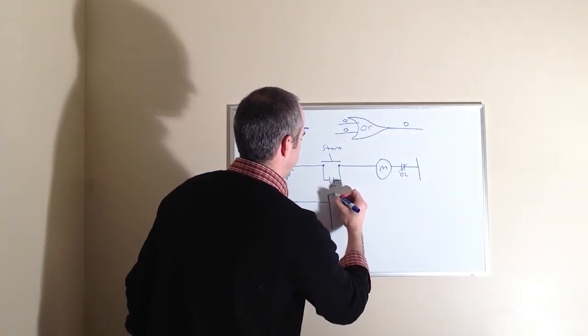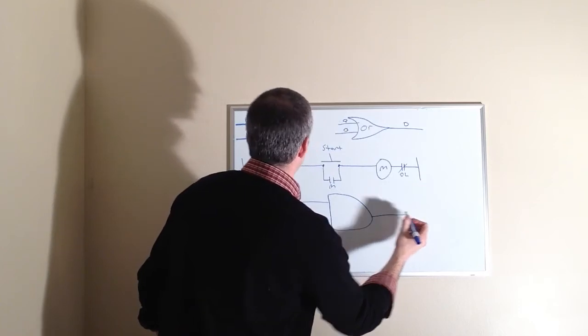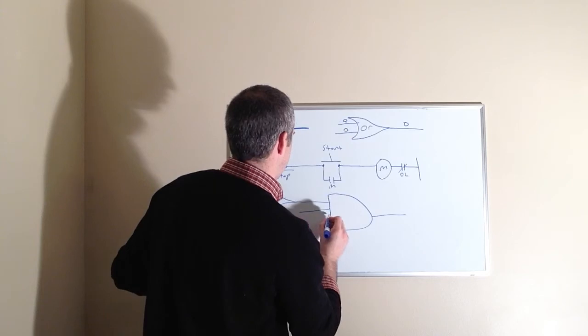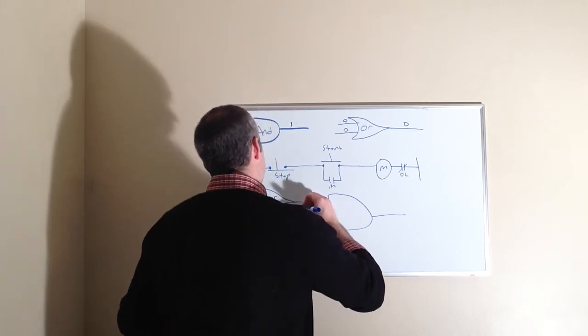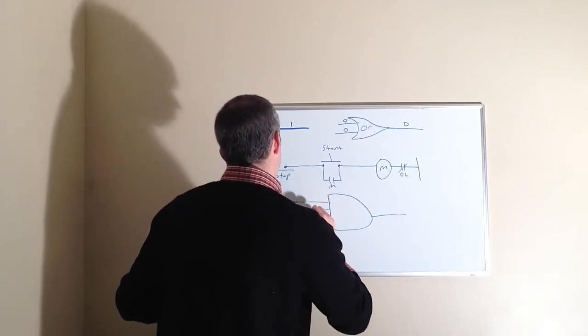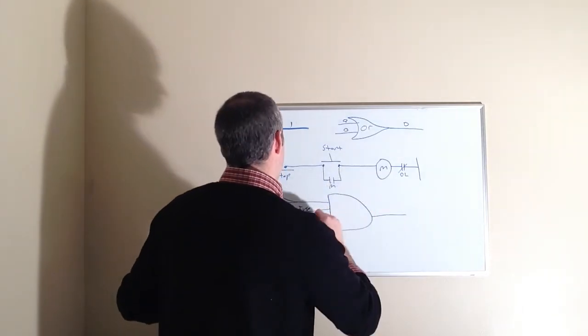And then the OR gate is going to go to an AND gate. So we have one, two, three more. Power, so we have a fuse, stop button, and the overloads.